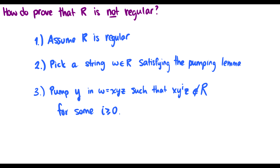So how do we prove that a language R is not regular? First we're going to assume that it is regular — assume there's some loop we can abuse and pump up and down. We're going to pick a string in R that satisfies the properties we need, and then pump it such that the string is no longer in R. If doing the loop more times or skipping it entirely means the machine no longer accepts the string, then it's not actually possible to construct the machine in the first place.